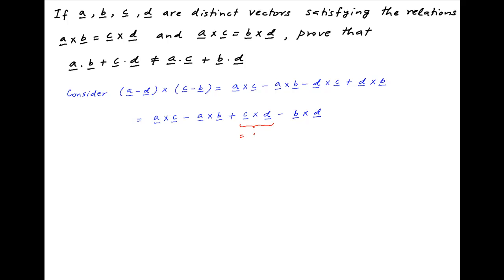Now we are given that c cross d is equal to a cross b, and we are also given that b cross d is equal to a cross c.